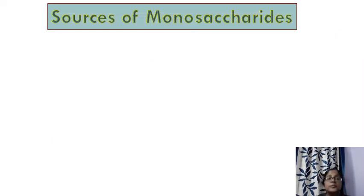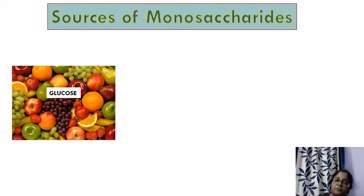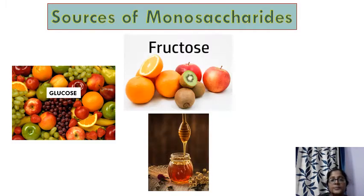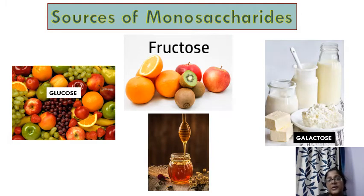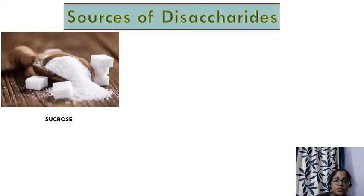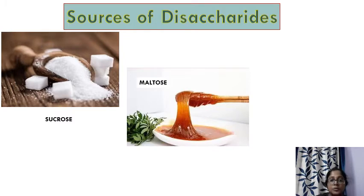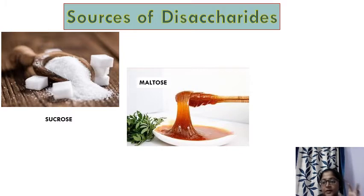Now let's look at the different sources of each carbohydrate type. Glucose is found mainly in fruits and some vegetables. Fructose is found in fruits and honey — honey is a great source of fructose. Galactose is found in milk and milk products. For disaccharides, sucrose is table sugar, and maltose comes from malt, which is made by steeping cereals.